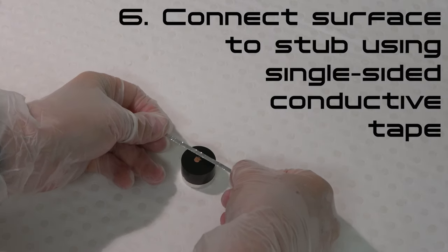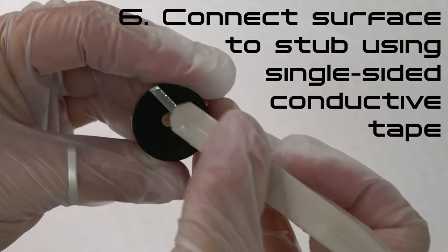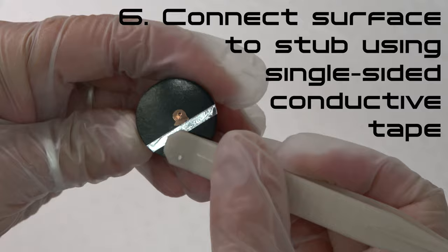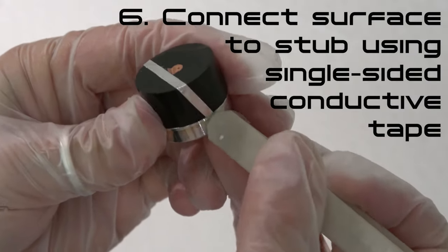Step 6: For resin-mounted samples, connect the sample surface with the SEM stub using single-sided conductive tape. Ensure that the tape makes good contact with the surface, including at the edges. Do not place tape on or near an area of the sample that you wish to examine.